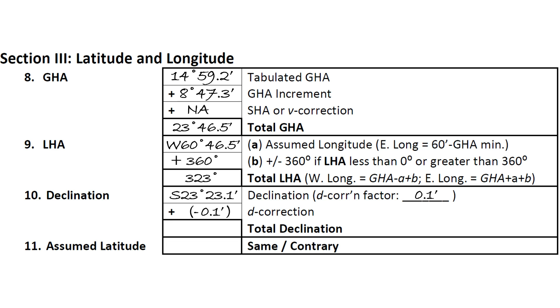Now, we simply sum these terms to get the total declination, remembering to subtract if our decorrection is negative. In our example, we see that this sums to 23 degrees south and 23.0 arcminutes.